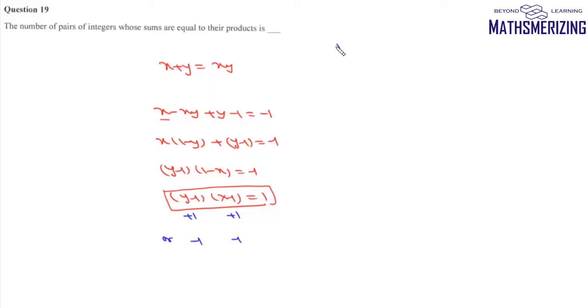First case: when y minus 1 is 1 and x minus 1 is 1, that is when the value of x is 2 and the value of y is 2.